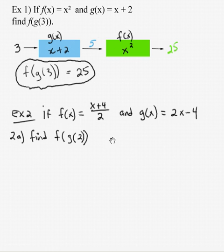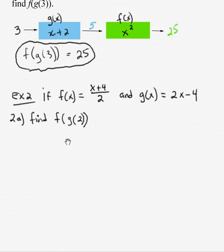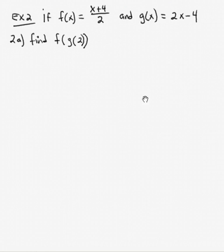Let's look at another numerical example. If f of x is x plus 4 over 2 and g of x is 2x minus 4. For example 2a, find f of g of 2. That's our first goal here.